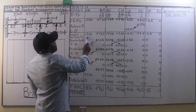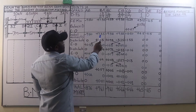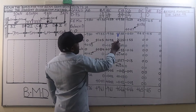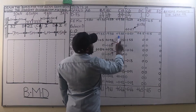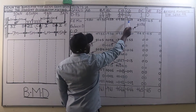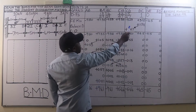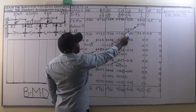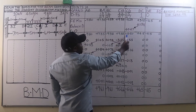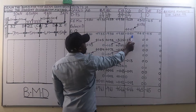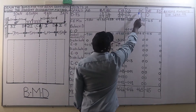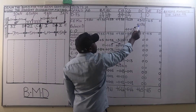The fixed end moments for member AB, member BA, member BC, and member CB are written. For member CD we add the fixed end moment with what has been carried over — that is, 0.67 — which gives negative 4.60.